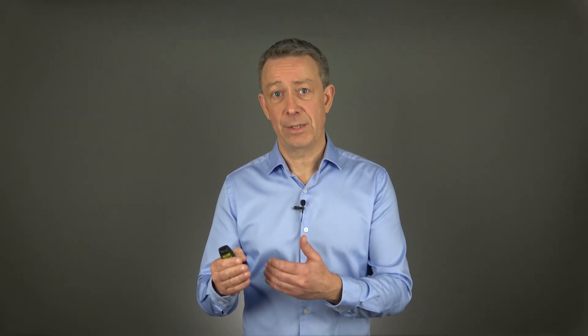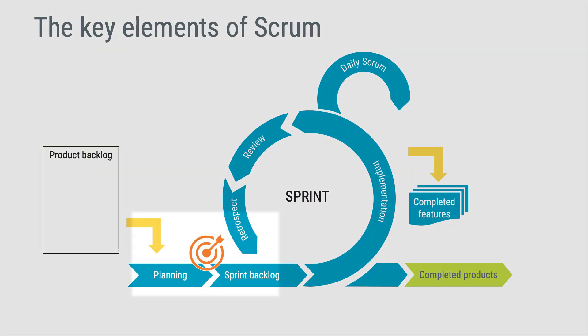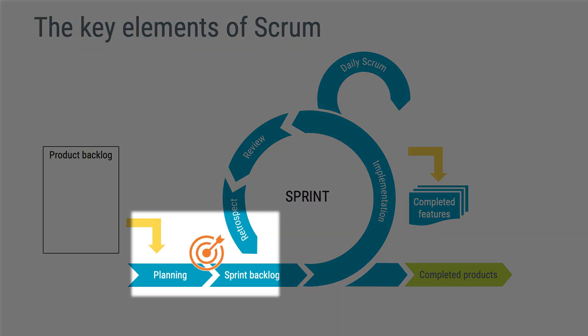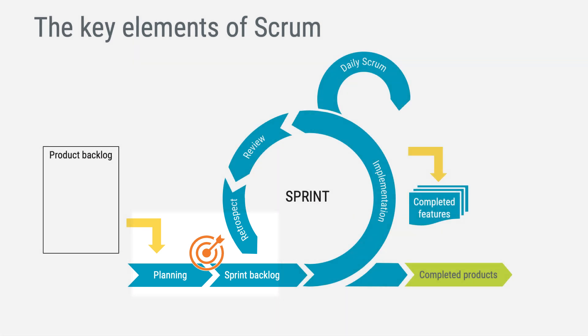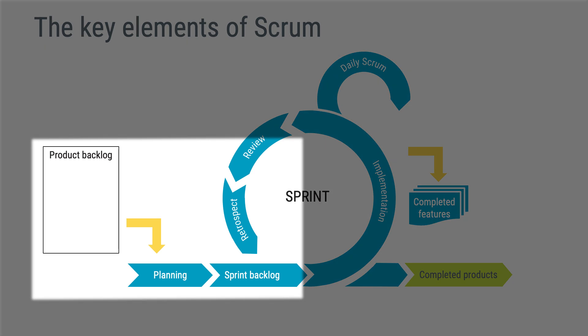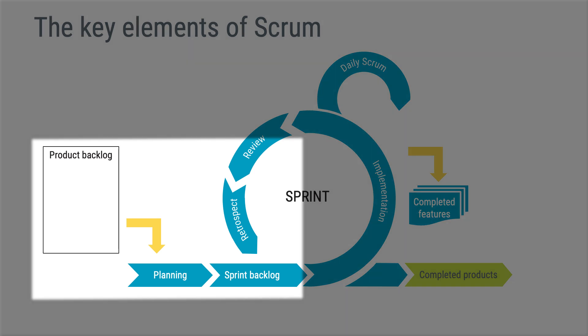For instance, before a new sprint is started, the development team agrees on a sprint goal and plans the work that will be carried out. Once the sprint starts, the sprint goal is the focus and changes should be deferred to the next sprint. Before a sprint can begin, three key components must be in place: the product backlog, the sprint backlog, and sprint planning.